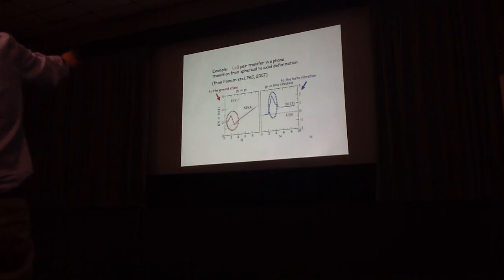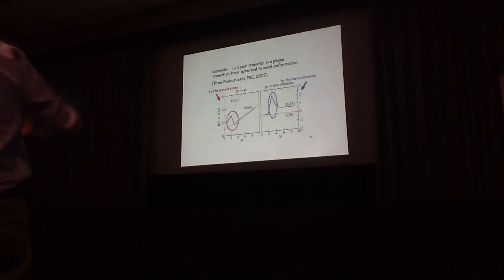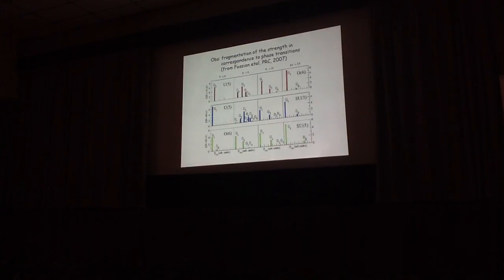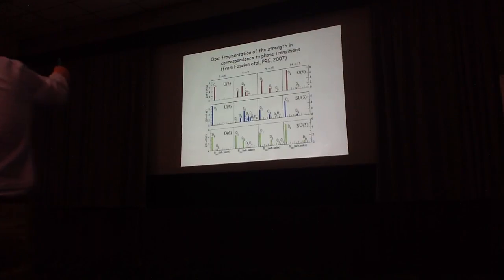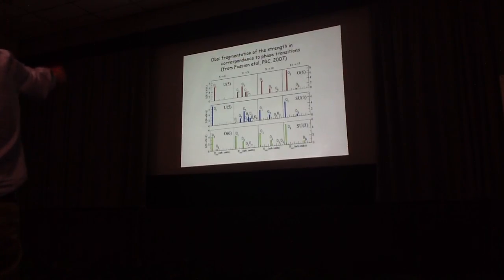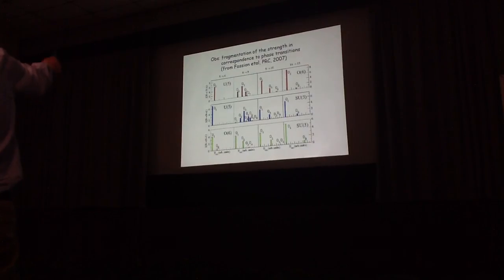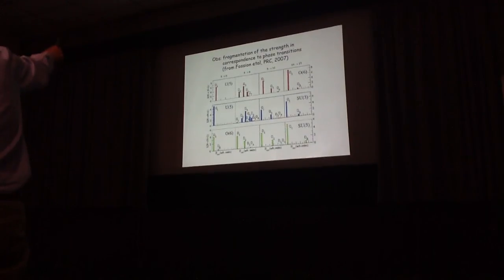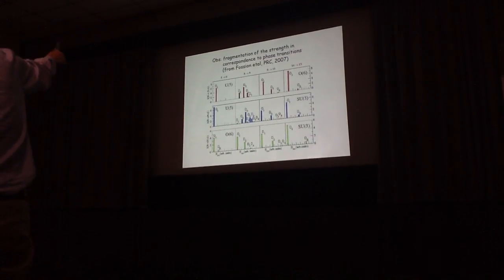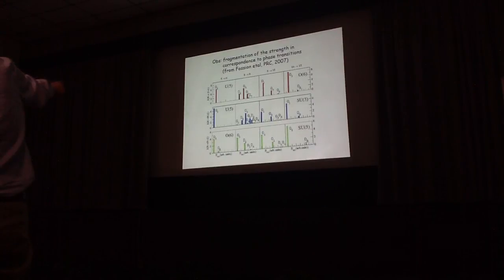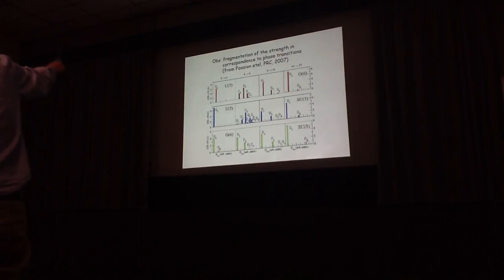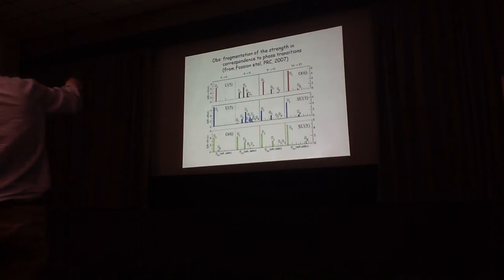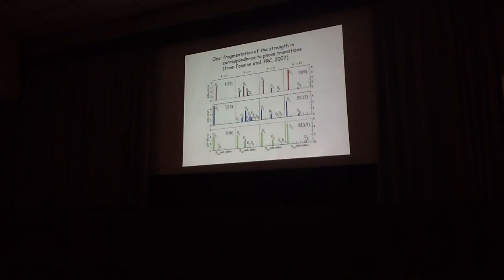In this case, you see that at the phase transition there is a strong population of the beta band. And the same thing you can see maybe better in the fragmentation of the pair strength in correspondence to the phase transition. In this case, the phase transition was produced around 9, between 8 and 9 bosons. And then you could see that in correspondence of the phase transition, the pair strength breaks into fragments.